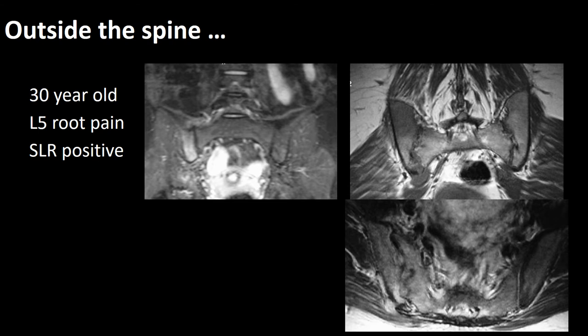One needs to remember that the L5 and S1 nerve roots exit and run anterior to the sacrum into the lumbar plexus, making them vulnerable to irritation that may also result in sciatica. Here is an example of a 30-year-old who presented with isolated L5 nerve root pain and a positive straight leg raise. On MRI scan there is increased signal in the right sacroiliac joint with subsequent destruction of that joint compared to the left — this turned out to be a Staphylococcus aureus infection.